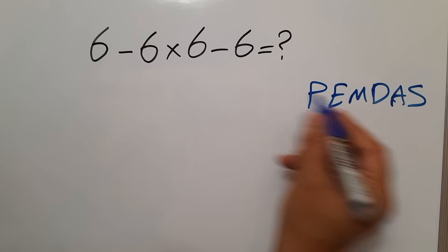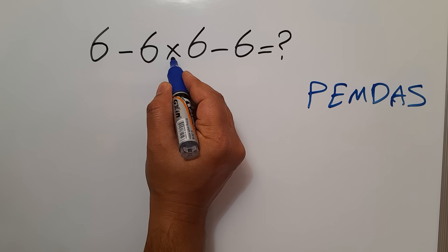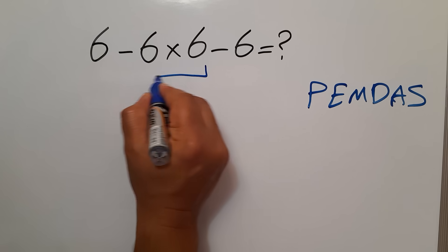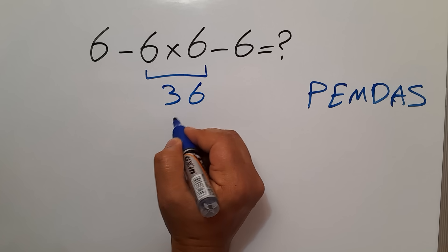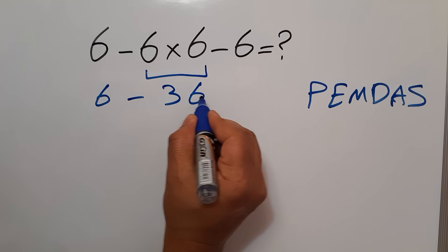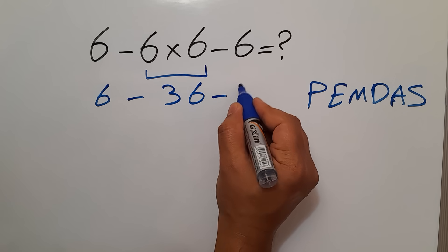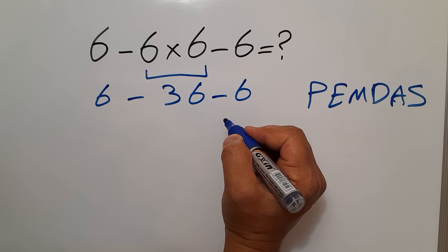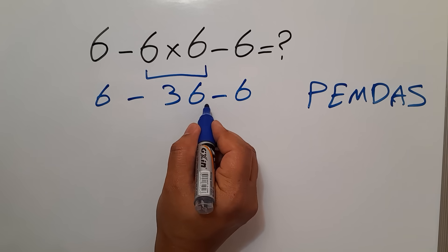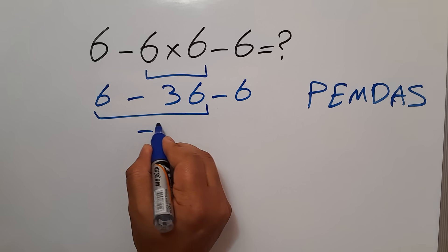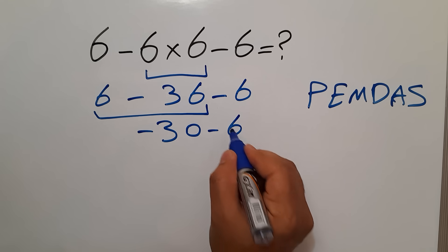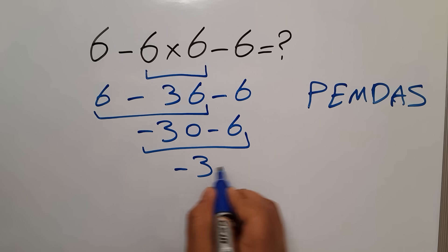So here we first do multiplication, then subtraction. 6 times 6 gives us 36. So we have 6 minus 36, and again minus 6. Working from left to right: 6 minus 36 gives us negative 30, and negative 30 minus 6 gives us negative 36.